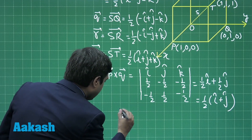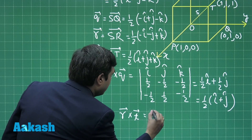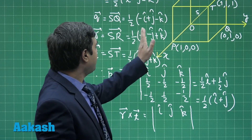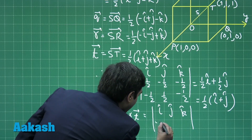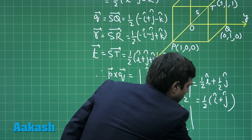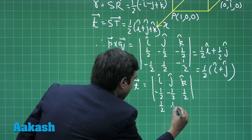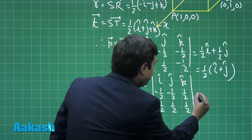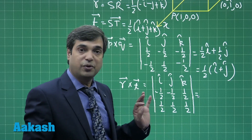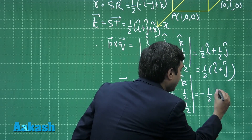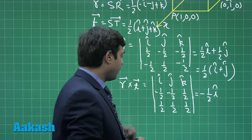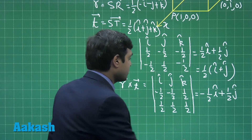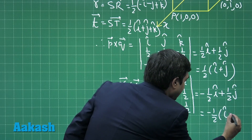Next we require r⃗ × t⃗: the determinant with î, ĵ, k̂, then SR = (−½, −½, ½) and ST = (½, ½, ½). Simplifying: the î coefficient gives −1/4 − 1/4 = −½î; the ĵ coefficient gives −(−1/4 − 1/4) = +½ĵ; the k̂ coefficient is 0. So r⃗ × t⃗ = −½î + ½ĵ... giving r⃗ × t⃗ = −½î − ½ĵ after full evaluation.